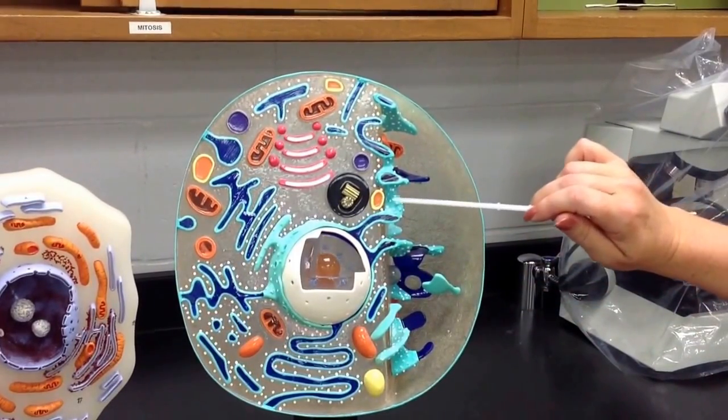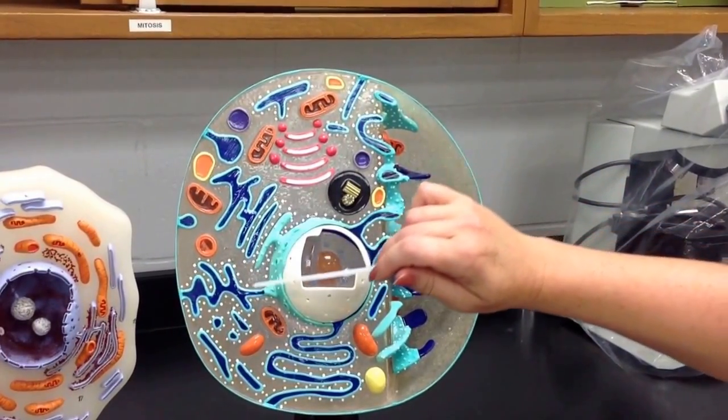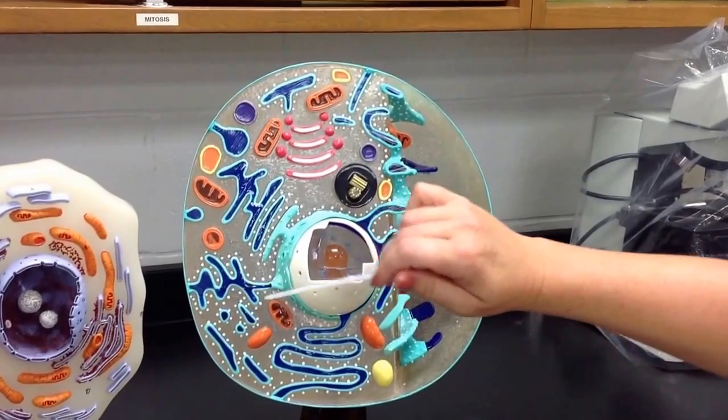Around the rough endoplasmic reticulum you have the ribosomes which are the little white dots on this model that you see here.